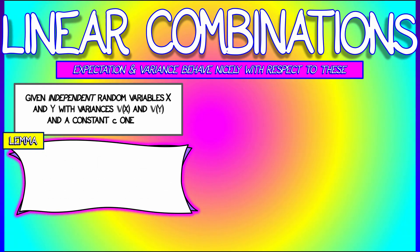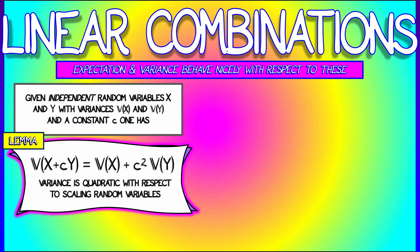Here's the thing. If you have independent random variables X and Y, and you know their variances, then the variance of the linear combination X plus cY is the variance of X plus c squared times the variance of Y. That means that variance is a little bit different. It's quadratic with respect to how you rescale a random variable.